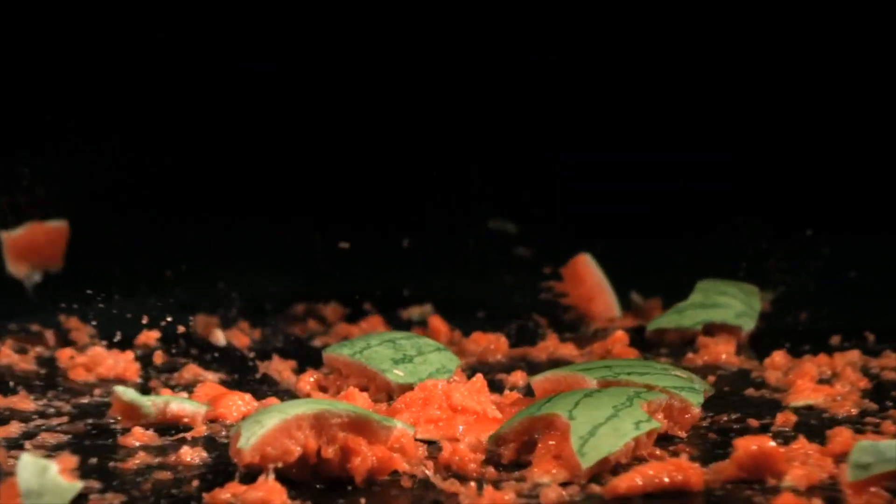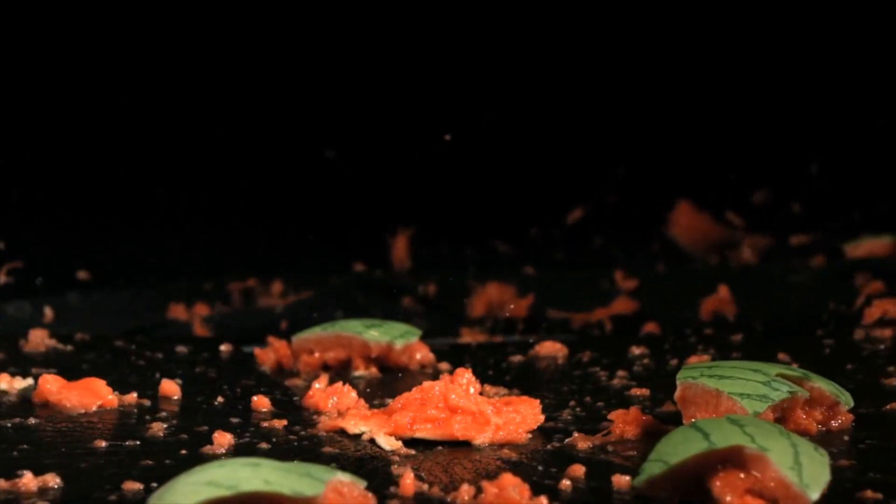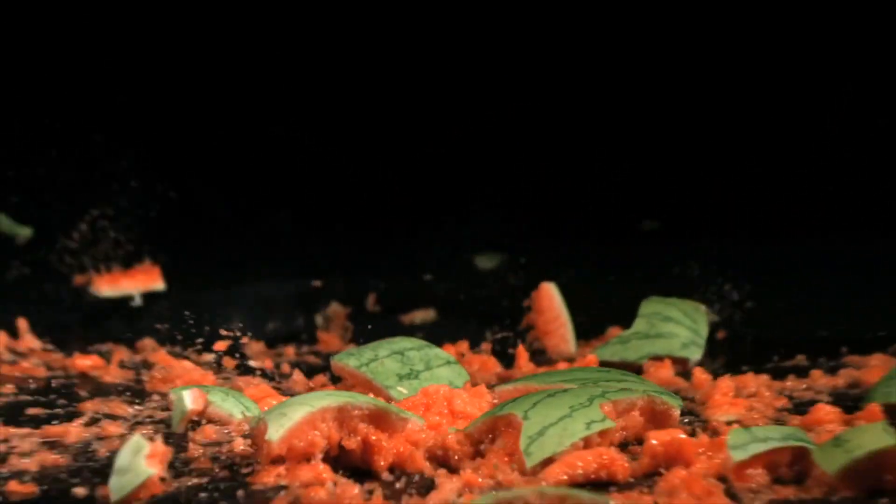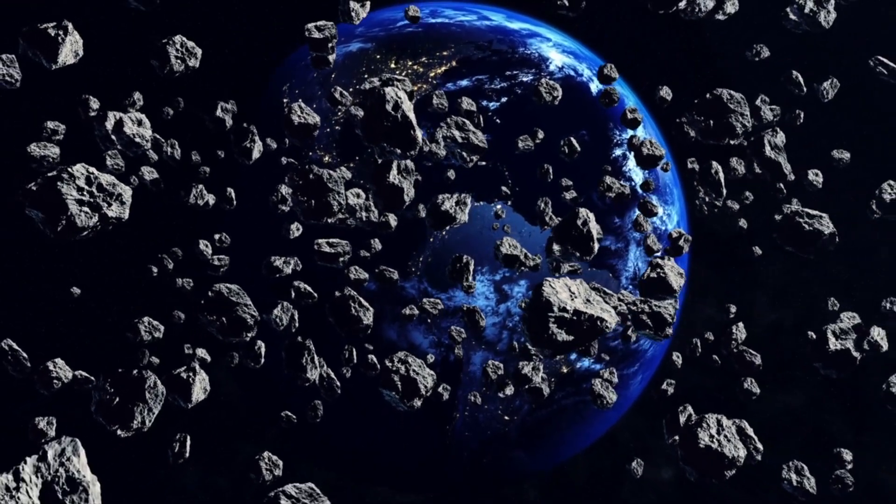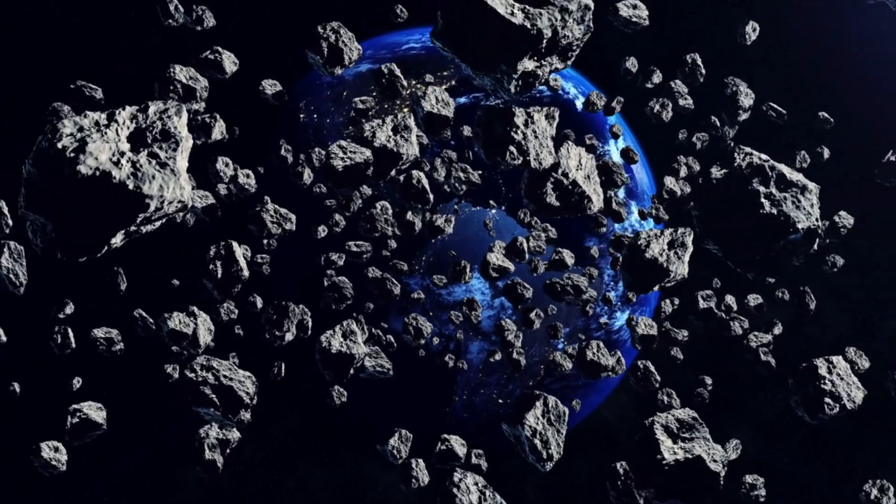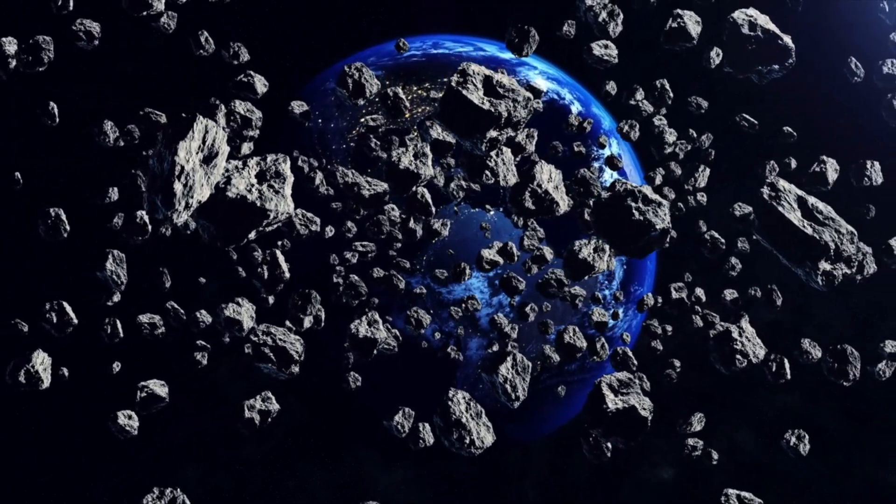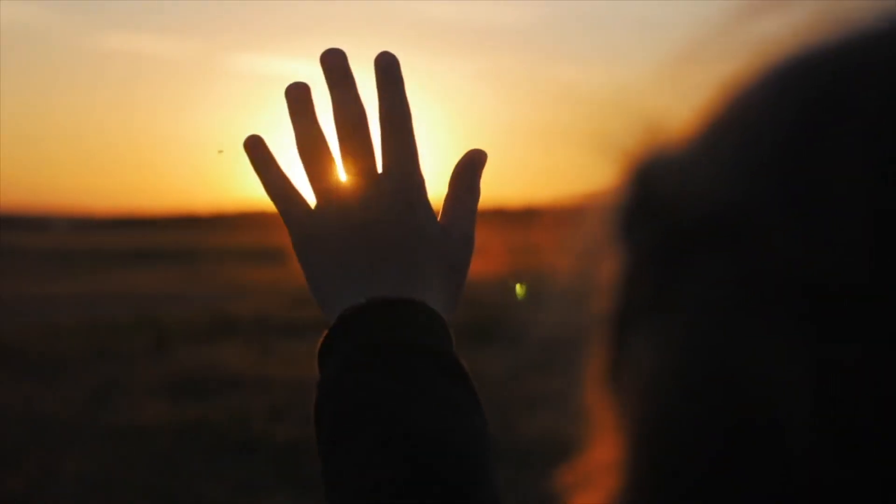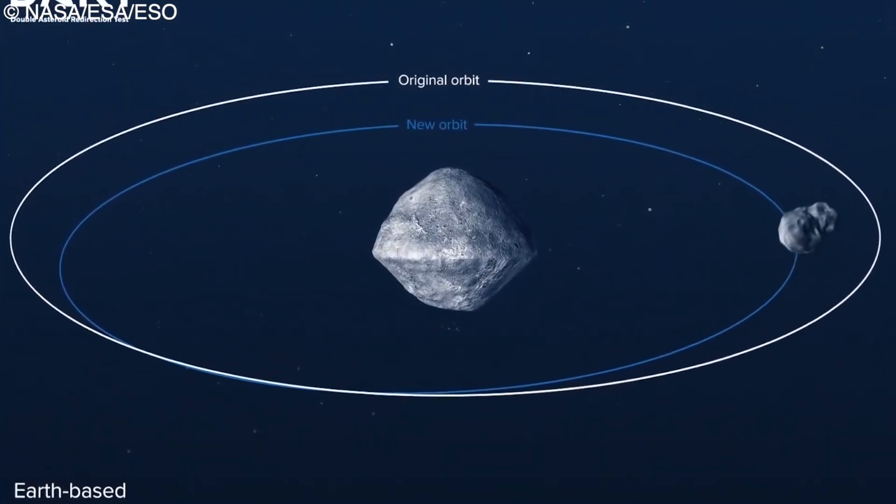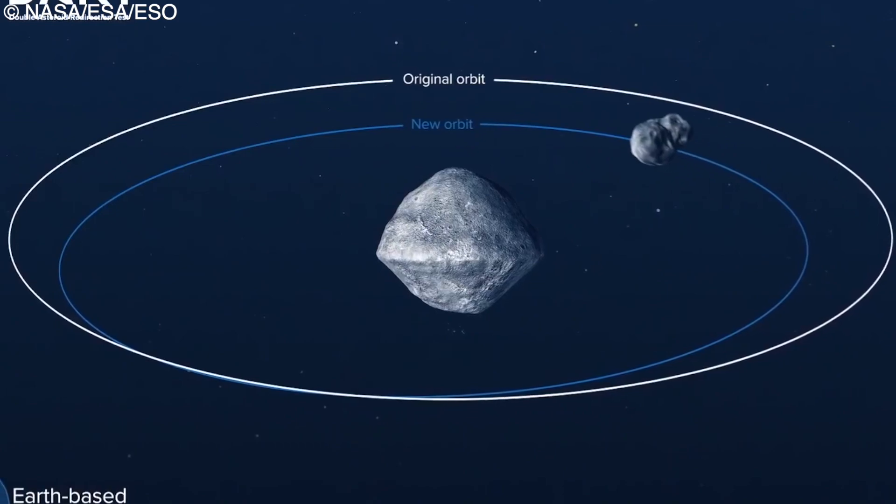To put it simply, assume an asteroid to be a massive watermelon. What happens when a watermelon is shattered? It disintegrates into a slew of smaller pieces. Following this reasoning, if NASA tried to blast an asteroid, it may result in a swarm of smaller but still deadly boulders heading directly for Earth. So, what's the backup plan?